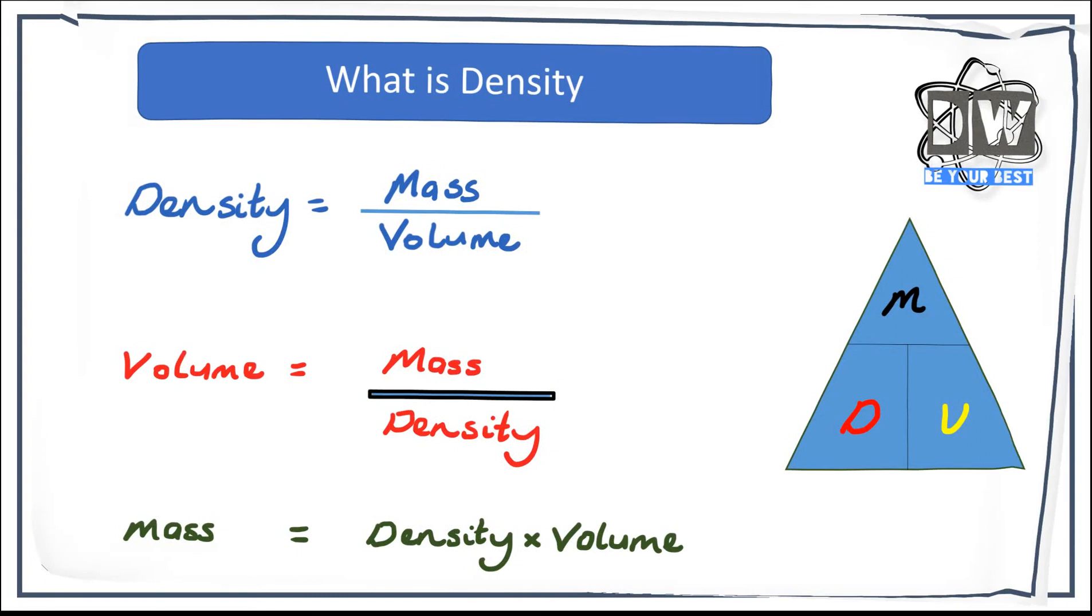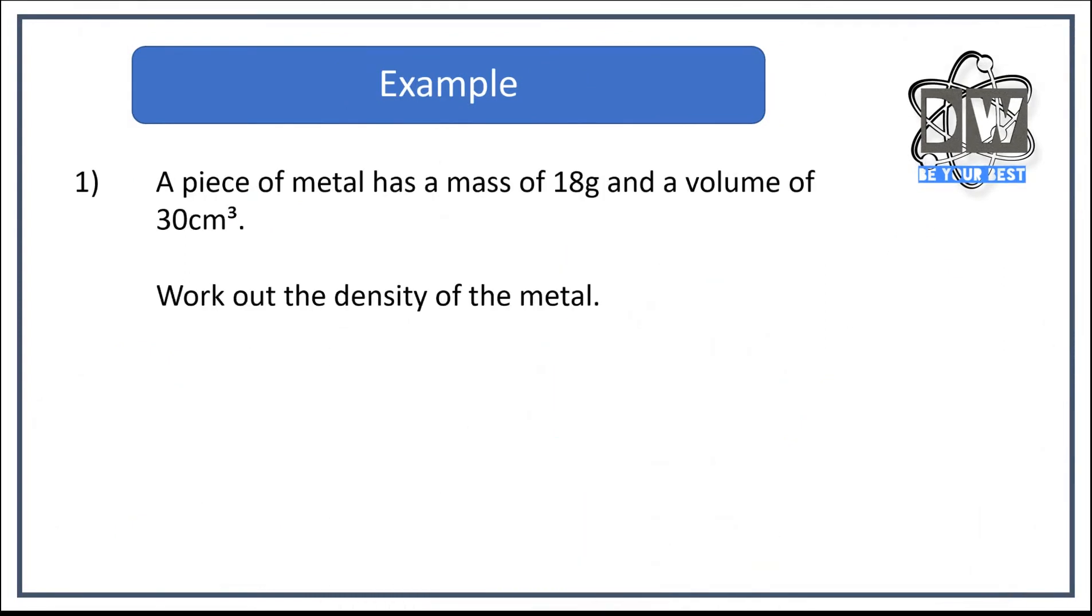Let's look at some examples now. A piece of metal has a mass of 18 grams and a volume of 30 centimeters cubed. Work out the density. The first thing we've got to do is write out our diagram. We've got our mass at top, density and volume at the bottom. Then we're looking for the density one. Let's write out that formula now. That's going to help us with that equation. We've got density equals mass over volume. Now all we're going to do to work out the question is we're saying, okay, we've got a piece of metal that has a mass of 18, so rather than having M we have 18.